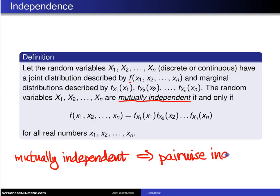It is not the case that you can go in the other direction. You can't assume that if you have pairwise independent random variables, then they are mutually independent, and you will see an example of why that is not true on the next slide.